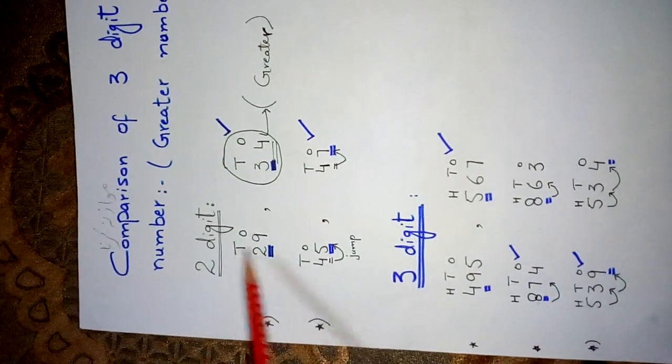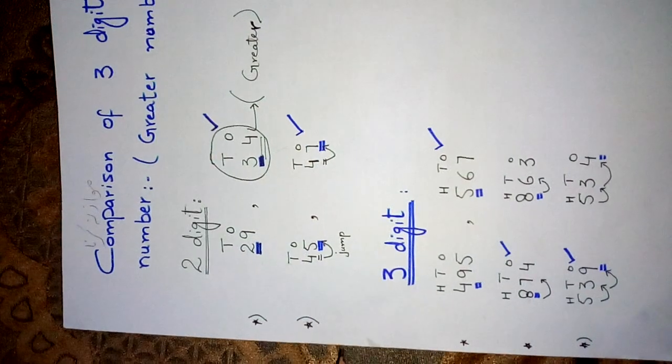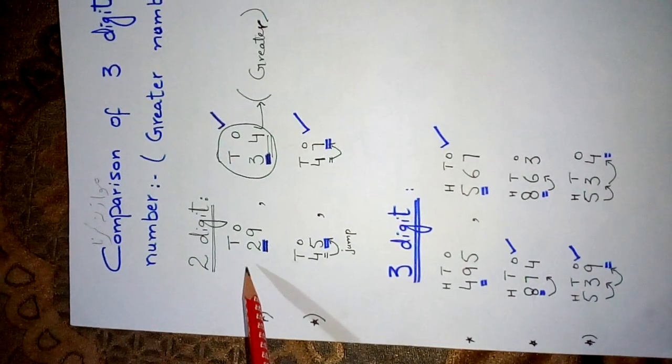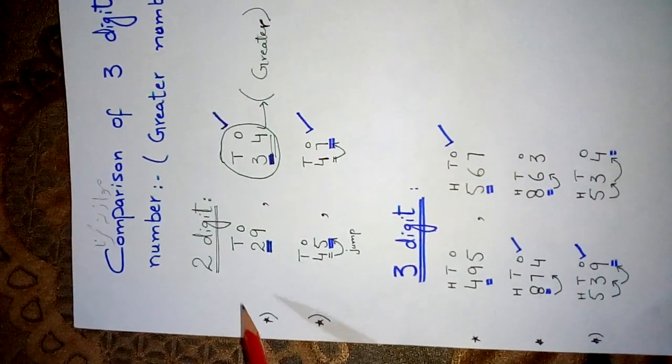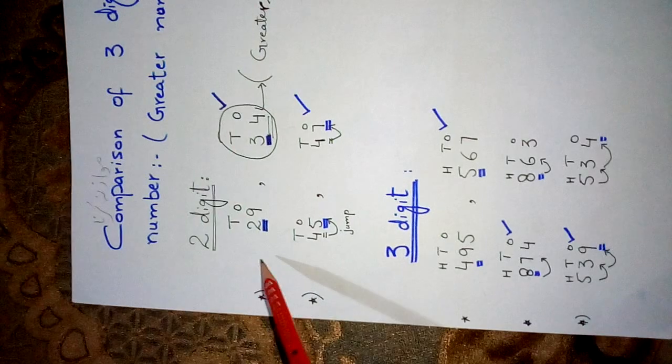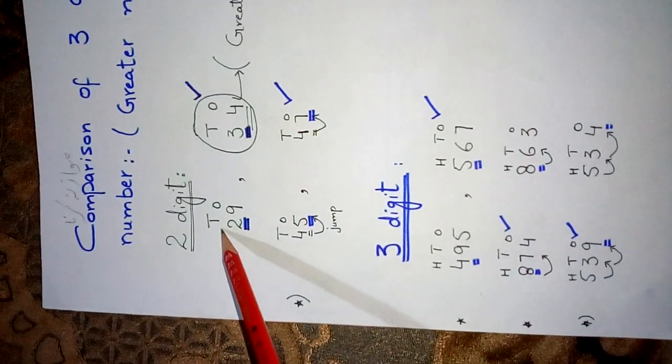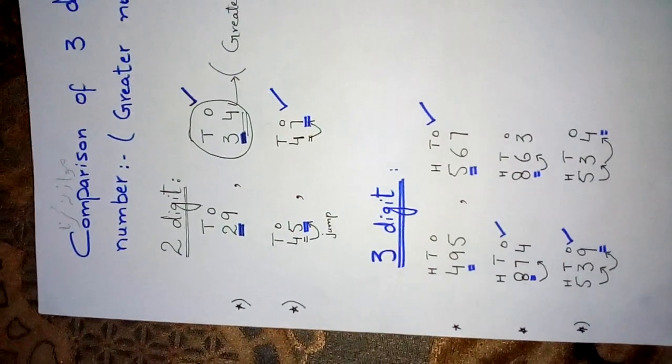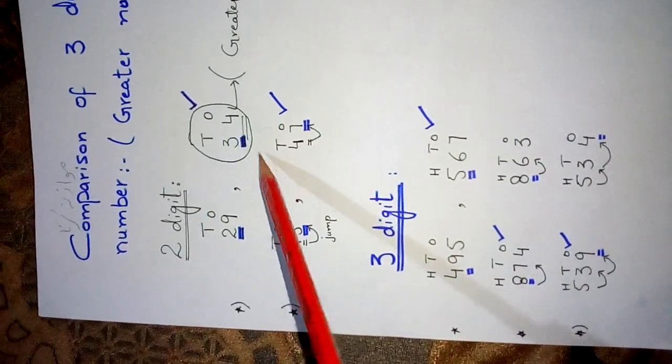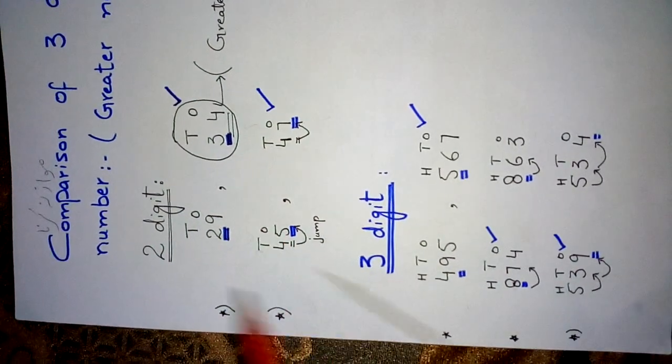First, I will show you two-digit comparison. The first question is 29 and 34. First we write the place values above the digits. After writing place values, now we start comparison, but comparison will start from the left side, not from the right side. We will not start from the ones place value. We will always start from the left side, whether it's the last place value, tens, hundreds, thousands, any one place value. We start comparison from the left side. Here we have 2 and here we have 3.